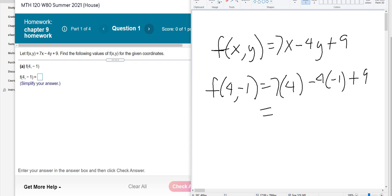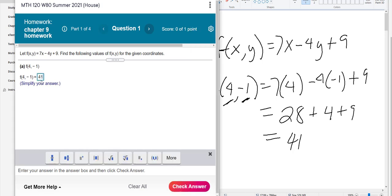So in this case, 7x minus 4y plus 9 becomes 7 times 4, because x is 4, minus 4 times negative 1, because y is negative 1, and then plus 9. So it's 28 plus 4 plus 9. That's 32, and 9 is 41. So it's just a straight substitution-type problem.